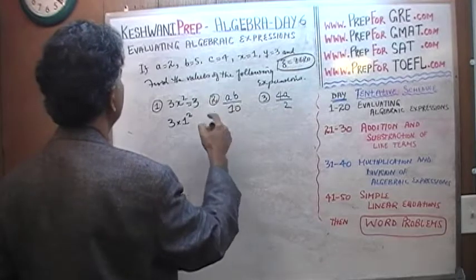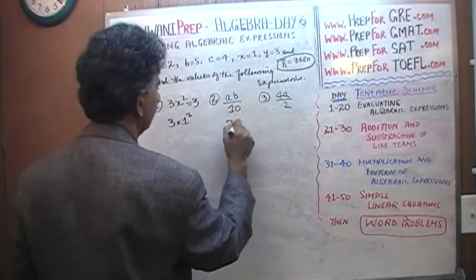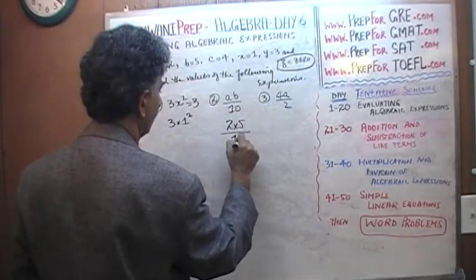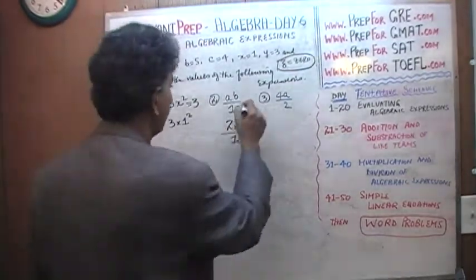A times B over 10. Well, 2 times 5 is 10 and 10 divided by 10 is 1 again.